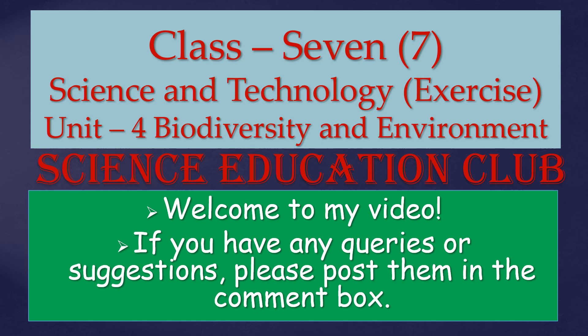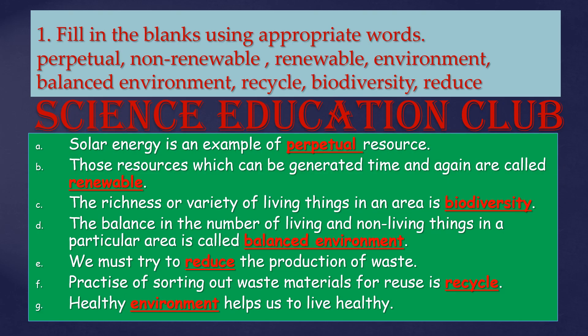Namaste dear viewer, today I have Class 7 Science and Technology, Unit 4: Biodiversity and Environment, fill in the blanks using appropriate words. Solar energy is an example of a perpetual resource. Those resources which can be generated time and again are called renewable. The richness of variety of living things in an area is biodiversity. The balance in the number of living and non-living things in a particular area is called balanced environment. We must try to reduce the production of waste. The practice of sorting out waste materials for use is recycling.